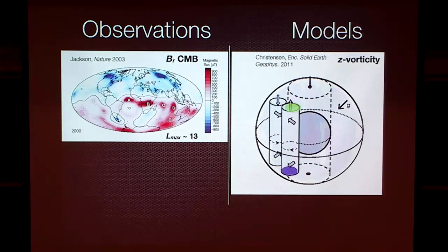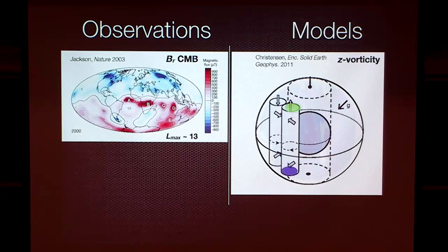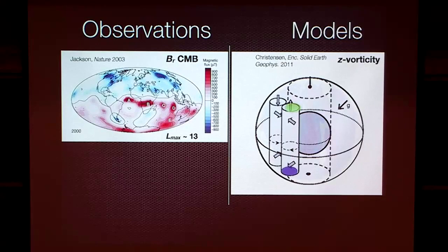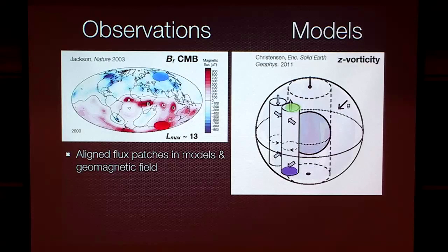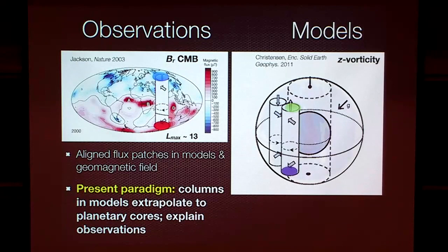It's still a columnar process. There's basically a convergence to the equator that pushes some stuff out and pushes flux out near the equatorial plane. So the zeroth-order takeaway is: not bad — we see them in both. The present paradigm for planetary core dynamo physics is that you've got big columnar flows, and you extrapolate the ideas of magnetohydrodynamics of those big columns to planetary cores to roughly explain the observations.